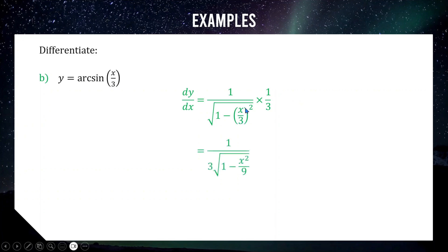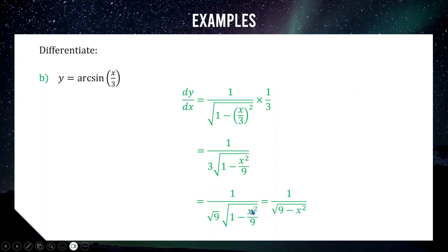We now have x squared over 9 inside the square root. We write the one-third factor as the square root of 1/9, then multiply 9 through the bracket: 9 times 1 is 9, and 9 times x squared over 9 leaves x squared. So the expression simplifies to 1 over the square root of 9 minus x squared.